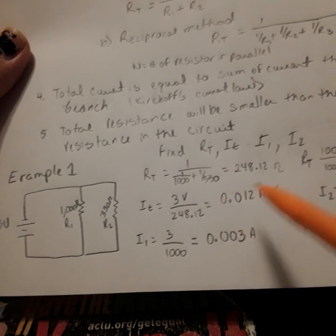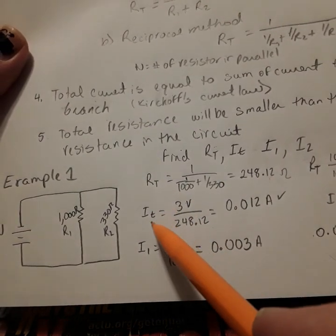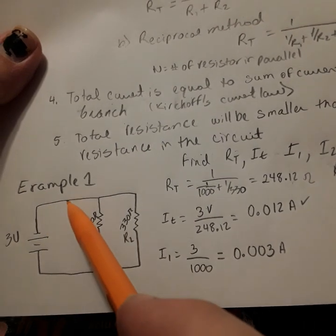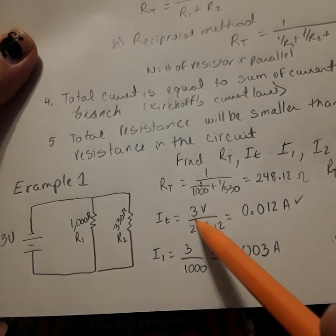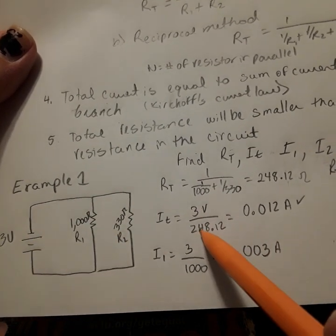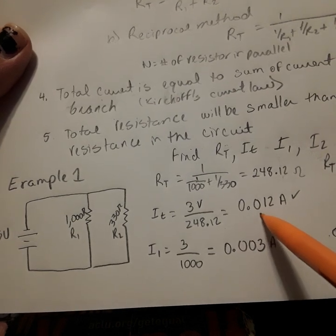Now that we know the total resistance, we can find the total current coming out here. IT would be here. The total current is 3 volts divided by 248.12, which gives us 0.012 amps.